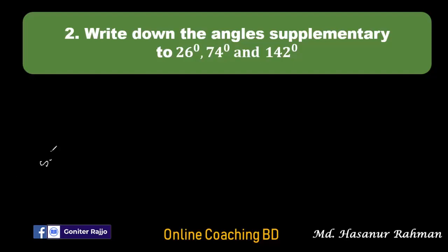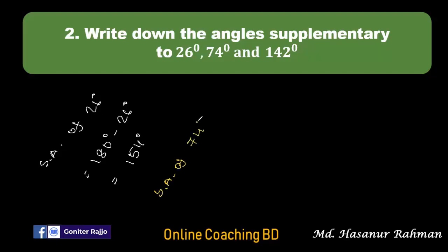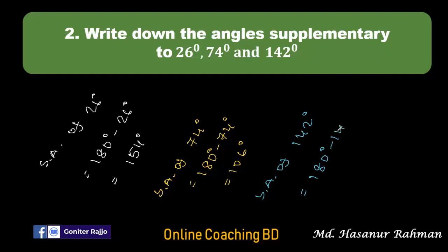Supplementary angle of 26 degrees will be 180 degrees minus 26 degrees, that is 154 degrees. Now supplementary angle of 74 degrees will be 180 degrees minus 74 degrees, that is 106 degrees. And the supplementary angle of 142 degrees should be 180 degrees minus 142 degrees, and the result is 38 degrees. So 154 degrees is supplementary to 26, 106 degrees is supplementary to 74, and 38 degrees is supplementary to 142.